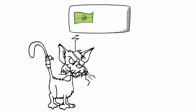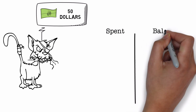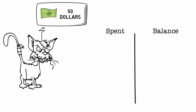I have $50 which I wish to spend. On the left I will write down the amount spent and on the right I will write the balance each time I spend. So I start with spending $20 and I am left with $30. From these $30 I spend $15 and I am left with $15. From these $15 I spend $9 and I am left with $6. And finally I spend the last $6 and I am left with $0.